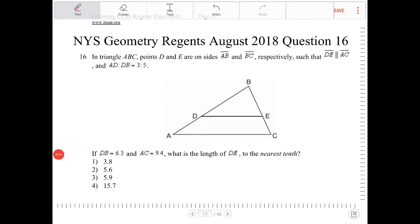In triangle ABC, points D and E are on sides AB and BC, respectively, such that DE is parallel to AC, and AD and DB are partitioned into ratios of 3 to 5.